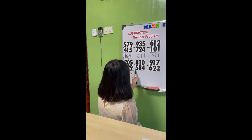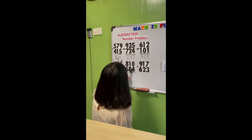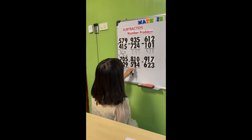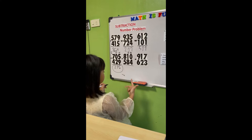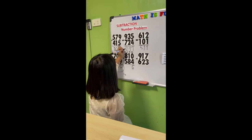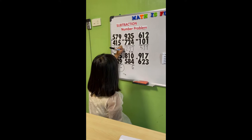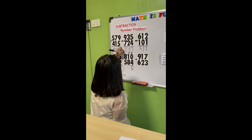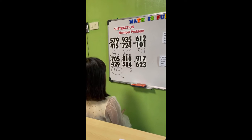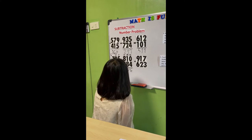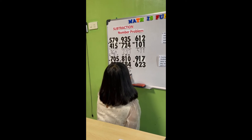810 minus 584. 0 minus 4 cannot be, so we will borrow from the tens. The tens become 0, and the ones become 10. The tens then borrow from the hundreds, so the hundreds become 7 and the tens become 10. 10 minus 4 equals 6. 7 minus 5 equals 2. Our final answer is 226.